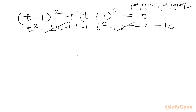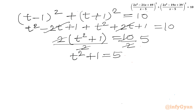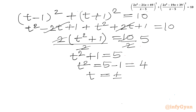The minus 2t and plus 2t cancel out. So we get 2(t² plus 1) equal to 10. Dividing both sides by 2 gives t² plus 1 equal to 5, so t² equal to 4. Taking square roots on both sides gives t equal to plus or minus 2.